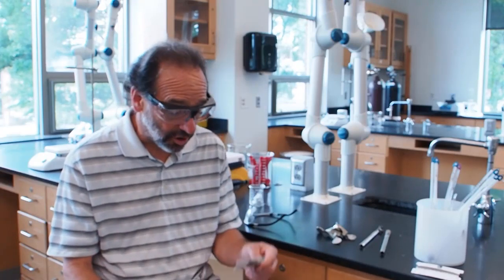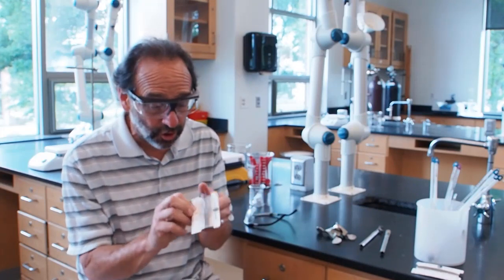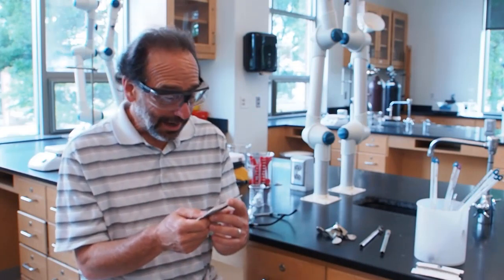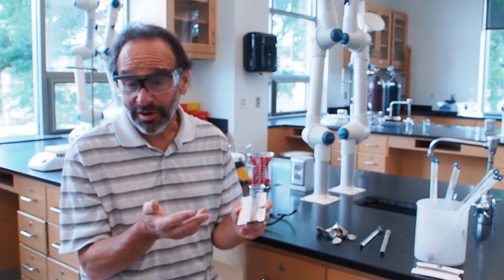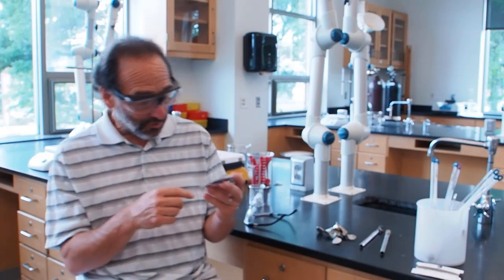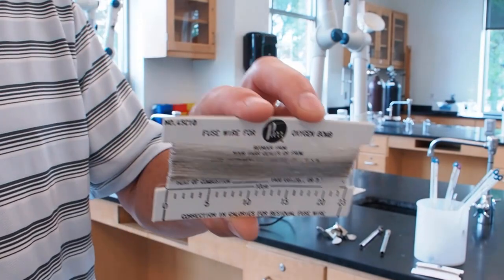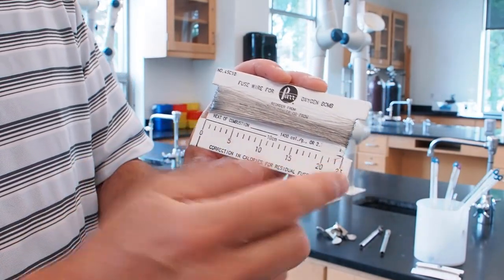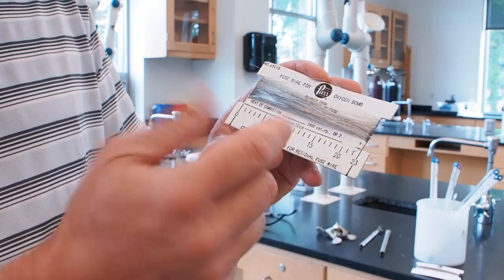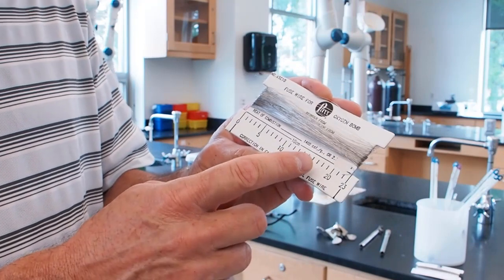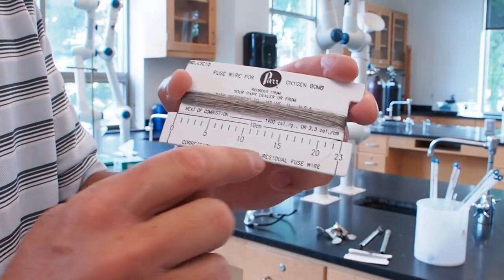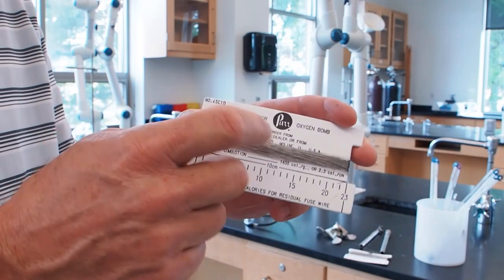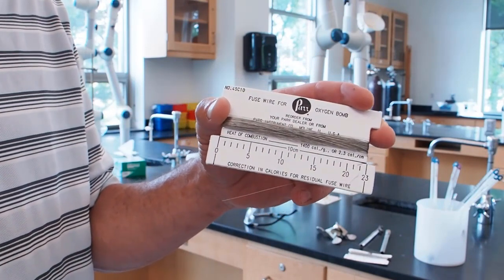The second thing is we're going to use some wire that burns. It's like a fuse. In fact, it's called fuse wire. That's going to ignite when we put an electric current through it and set the dog food burning. This is fuse wire sold by Parr, the makers of the bomb. And the wire itself is going to generate some heat, and we have to take that into account when we make our measurement. And in fact, this is really cool. The wire comes on a cardboard holder that gives you distances in centimeters. This is 10 centimeters long. It's 2.3 calories per centimeter of this wire that burns. So we're going to weigh the wire before and afterwards to know how much it contributes.